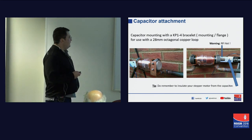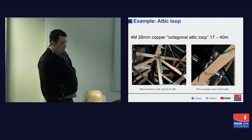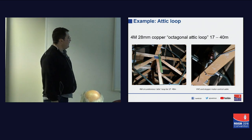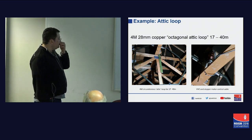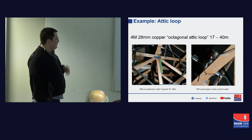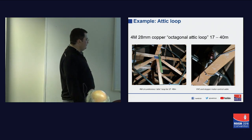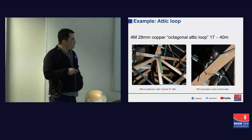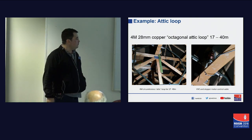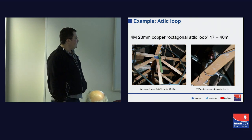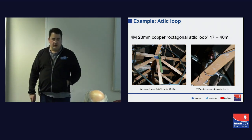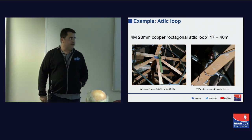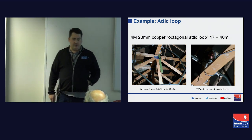In terms of some ideas — this is a four-meter circumference octagonal loop sitting in my attic. It's good for 17 through 40 meters. You'll see a gray cable here which is my stepper motor controller cable. Essentially you can hide the loop in your attic. If you can operate QRO from your attic, things in your house might not like it so much, but it will work — and certainly from a receive standpoint it works great.